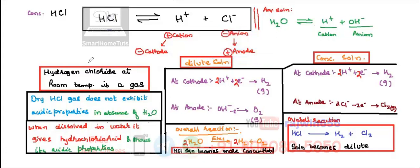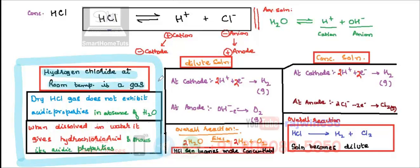When no water is present, hydrogen chloride at room temperature is a gas. This is the basic difference between electrolysis of NaCl and HCl. NaCl is an ionic compound, while HCl is a covalent compound. There is sharing of electrons between hydrogen and chlorine, because both are non-metals. So it is a gas at room temperature — there is no question of dissociation.